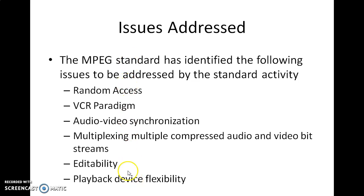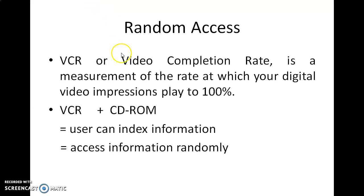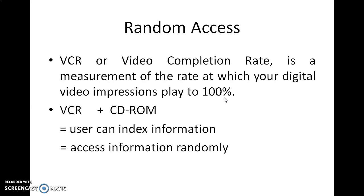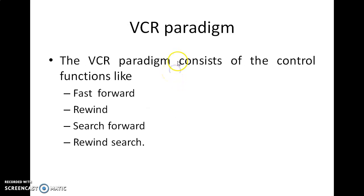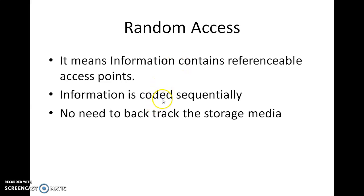The first issue is random access. It uses VCR plus CD-ROM technology to give the user index information and to access information randomly. VCR stands for video completion rate, measured as the rate at which digital video impressions play to 100%. Random access means information contains referential access points, information is coded sequentially, and there is no need to backtrack the storage media.